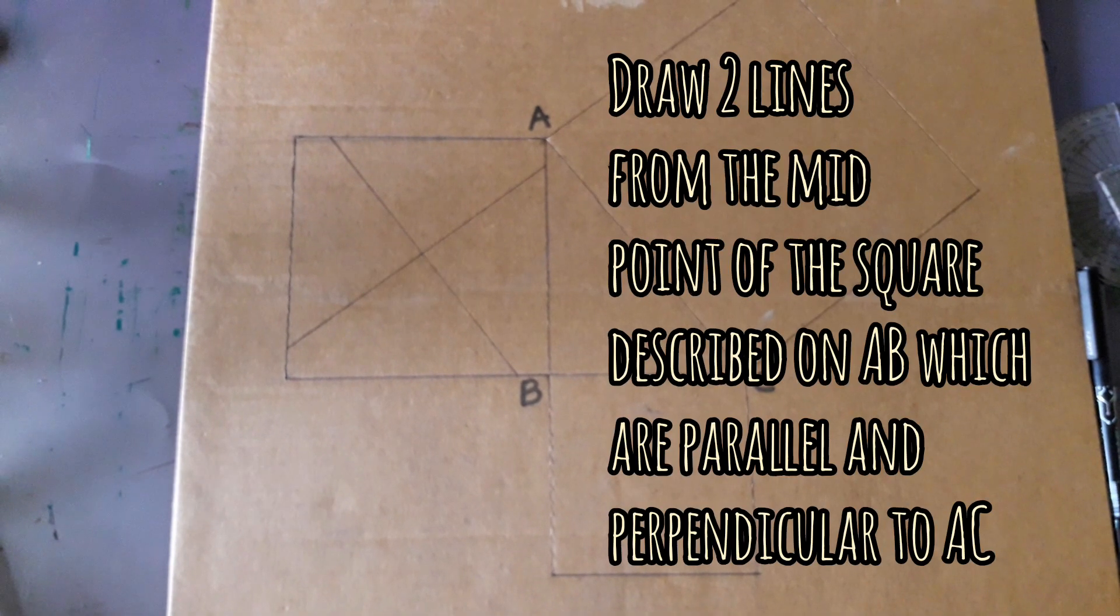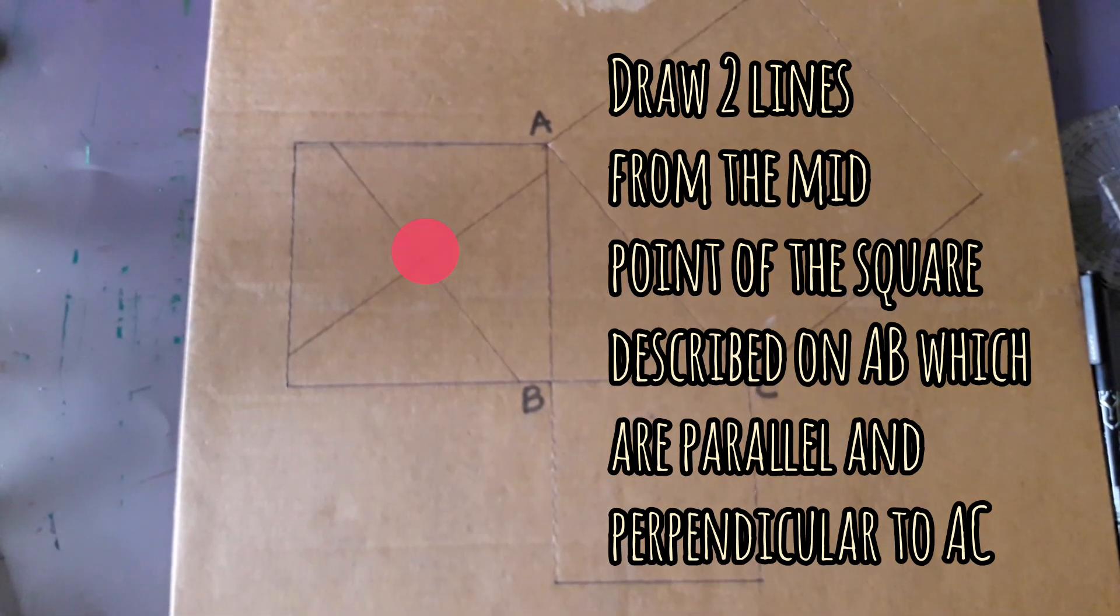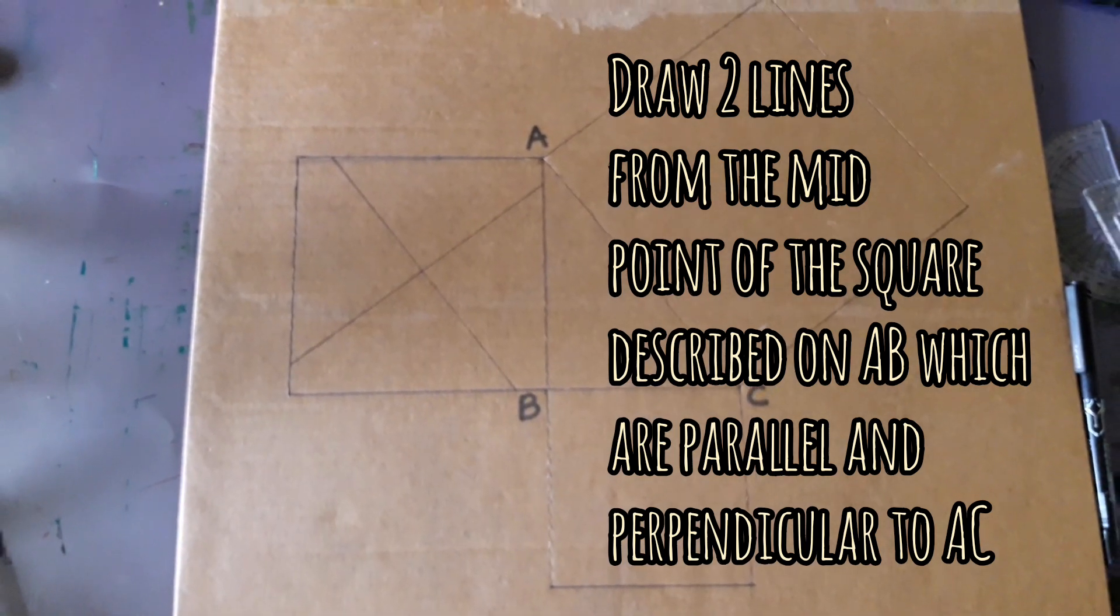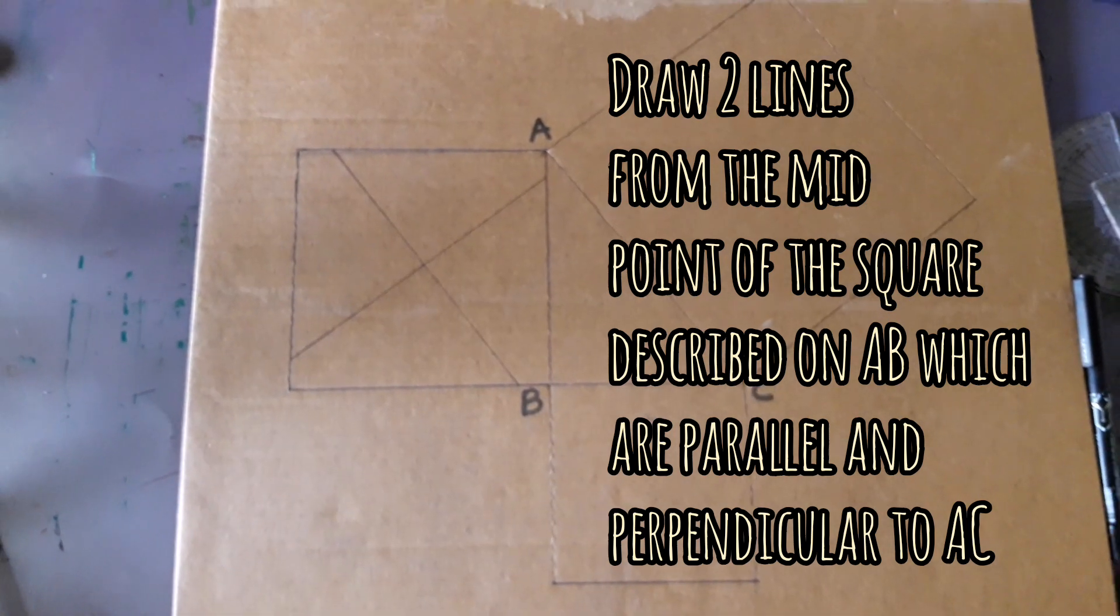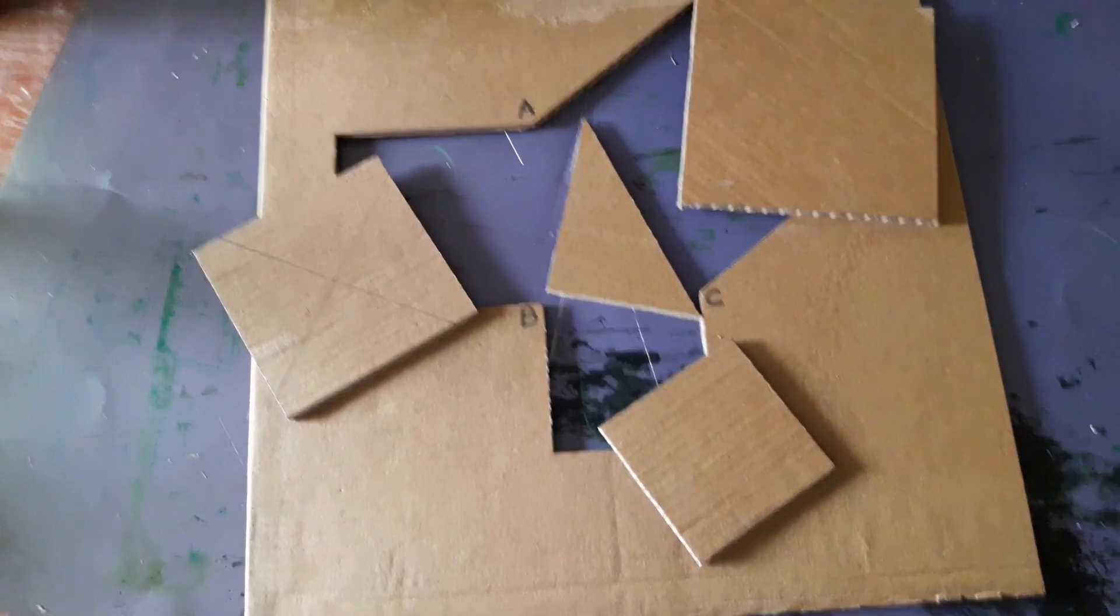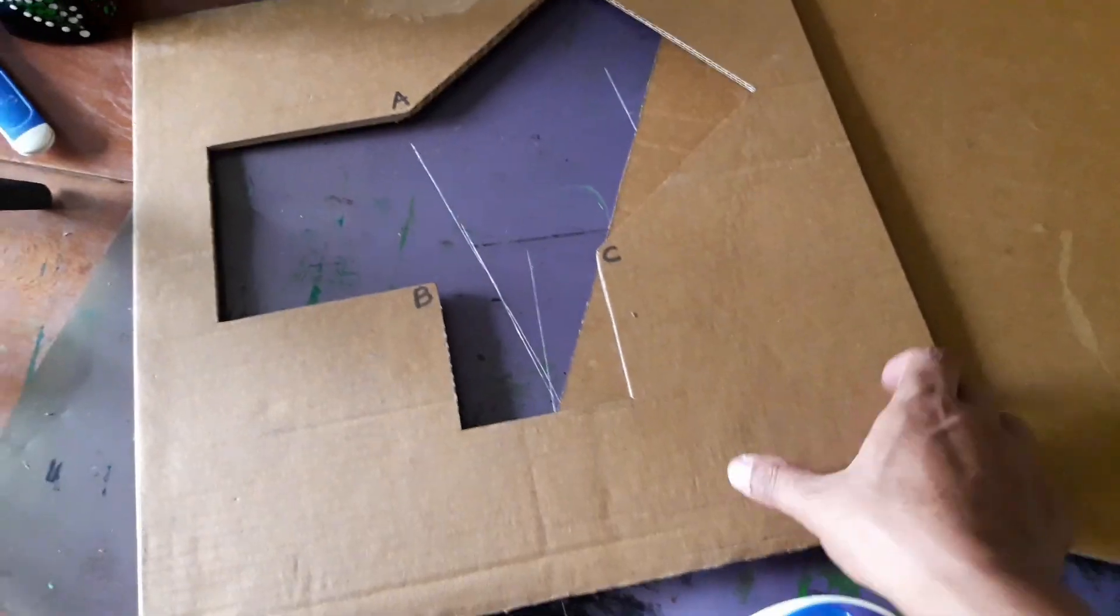Draw two lines from the midpoint of the square from AB which are parallel and perpendicular to AC. Cut out all the figures, paste the first board on the second board.